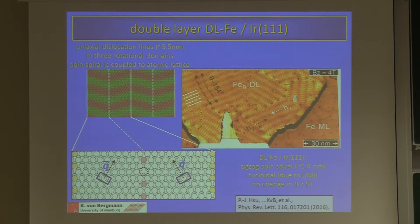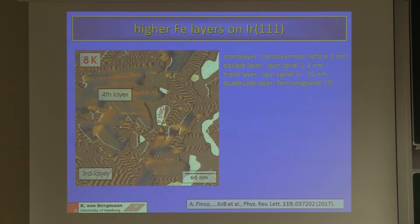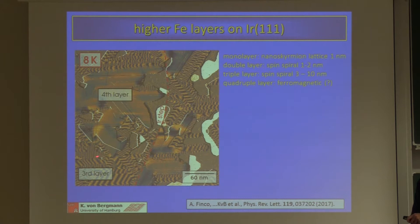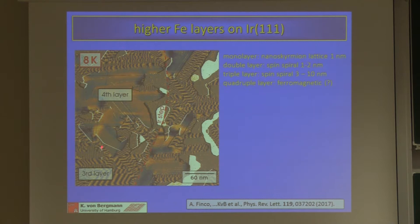With even more iron, we see regions of different local height. The double layer shows a spin spiral of 1–2 nanometers, the triple layer shows spin spirals of 3–10 nanometers, and the quadruple layer appears nearly ferromagnetic with very small anisotropy and no fixed period. So with increasing iron thickness, the magnetic length scale increases.